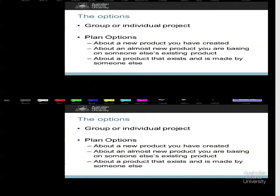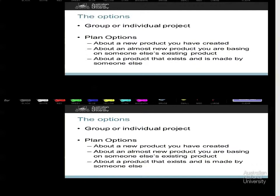Option B is playing on medium difficulty. Because an existing product is already there, there is a lot of information you can base your decisions on. However, because you are operating with an almost-new product, you still have some of the challenges that come with a completely new product and some of the limits that come with the existing product. The final option is to base your plan on a product that already exists in the marketplace, that somebody else already sells, and that you pretend to be that somebody else. This is also playing on medium difficulty.